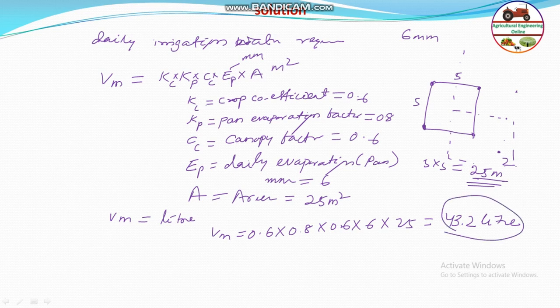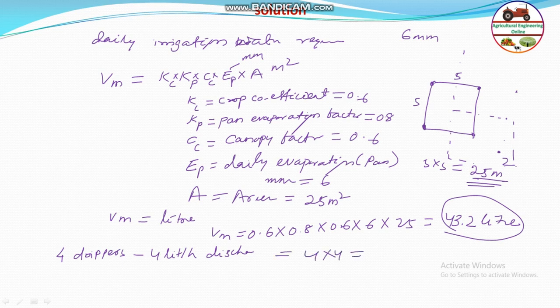There are four drippers per orchard, each with a discharge of 4 liters per hour. Since four drippers cover the 25 m² area of each orchard, the total discharge is 4 × 4 = 16 liters per hour.